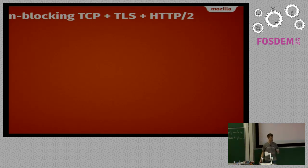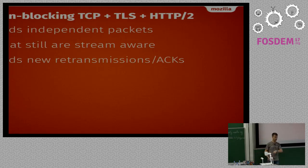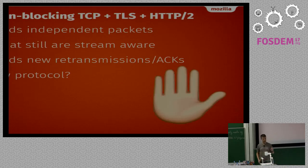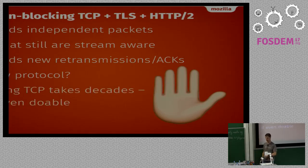We need to introduce non-blocking TCP/TLS for H2. We need independent packets so we can lose one and the rest can continue. They still need to be stream-aware so we know other streams can continue while just that one stream is halted. We could invent a new protocol, but we cannot because the internet has so many crappy middleboxes everywhere that just say no - new protocols have a really hard time getting deployed. Even fixing TCP to do this would take ages because it's kernel work, and getting anything into TCP takes a really long time.